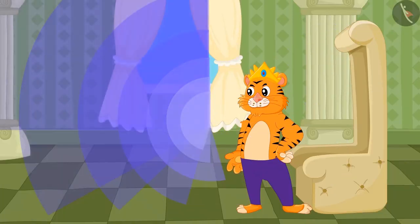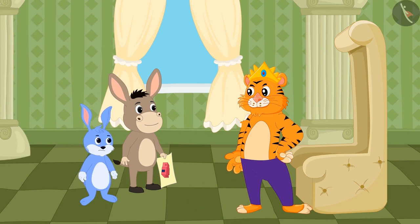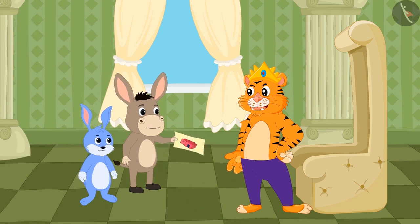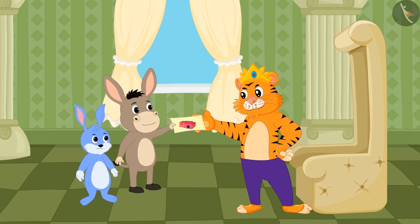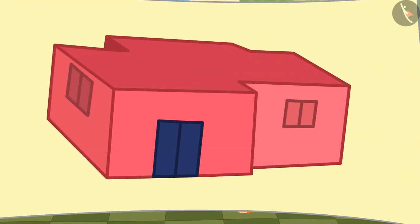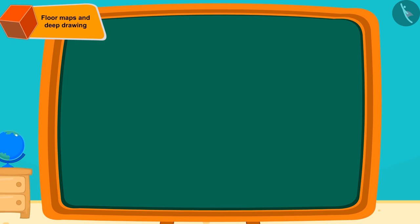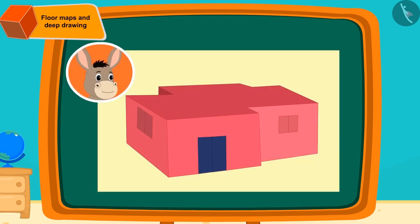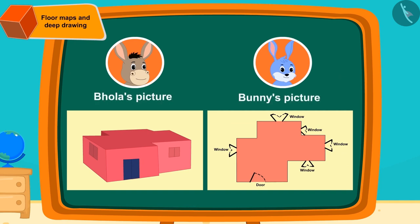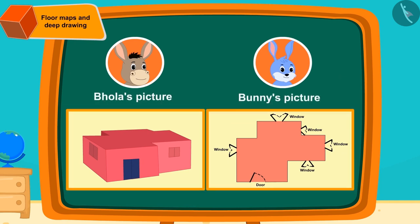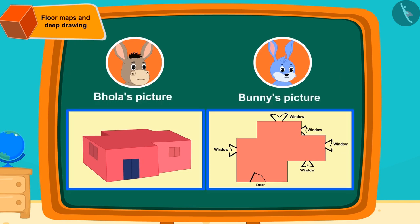The next day, Bholla and Bunny reached the king's court. Bholla showed the king a picture of his room design, and Bunny and the king were shocked to see it. Children, have you seen any picture similar to the one created by Bholla? Can you tell the difference between the two pictures that Bholla and Bunny made?